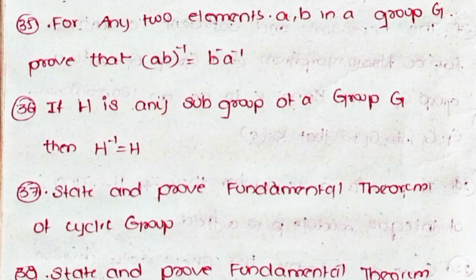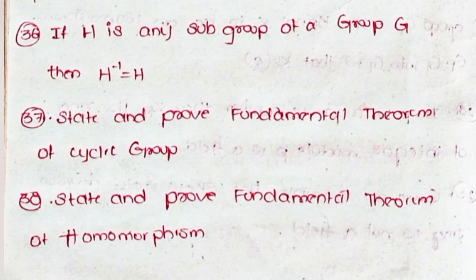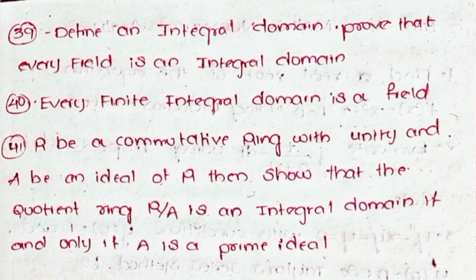Thirty-seven, state and prove the fundamental theorem of cyclic groups. Thirty-eight, state and prove the fundamental theorem of homomorphism. Thirty-nine, define an integral domain and prove that every field is an integral domain. Forty, every finite integral domain is a field. Forty-one, let R be a commutative ring with unity and A an ideal of R. Then show that the quotient ring R/A is an integral domain if and only if A is a prime ideal.